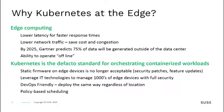Going forward in the next five years, 75% of all data will be generated outside of the data center, and in many cases, that data needs to be pre-processed or filtered at the source versus being sent to a central location. As you connect these systems to the internet, you need to worry about security.